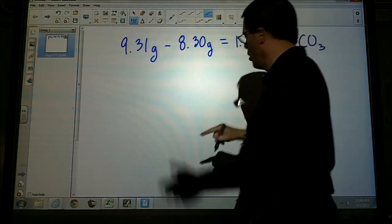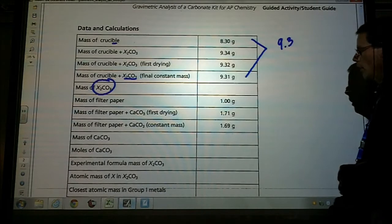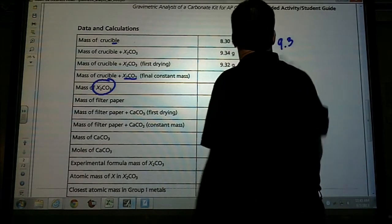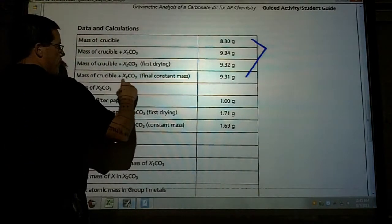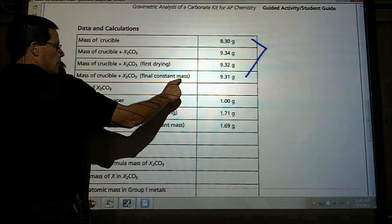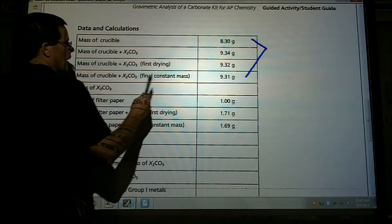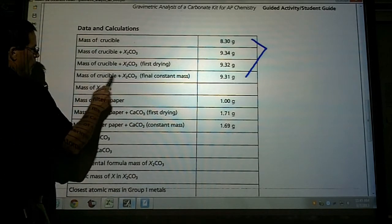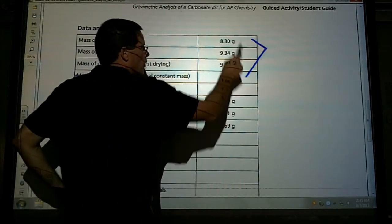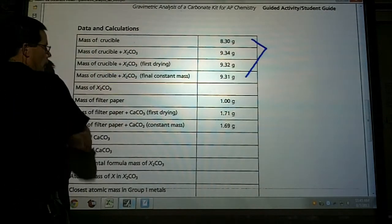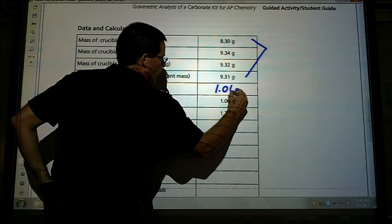We're going to take the difference of these two values here. So 9.31 grams minus 8.30. Luckily I can do that in my head. So 1.01 grams, and this is of the unknown compound. So we don't know what X is, but we definitely know what the carbonate is. We took the difference of our final heating mass, our constant mass, minus the evaporating dish. Because what we're trying to do is we're trying to get rid of this, and if this is with that, that's how we take this minus that. So our mass for that was 1.01 grams.